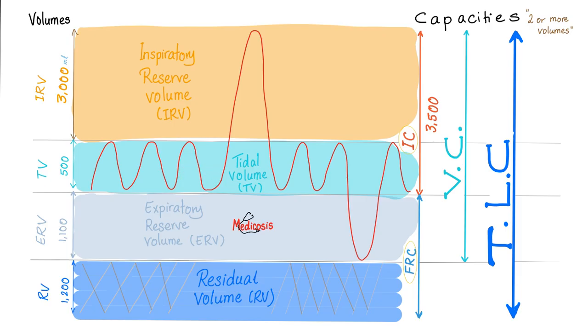Okay Adam, ready for the next challenge? I want you to breathe in maximally to the fullest of your abilities. So Adam will go like this. First, the normal, then the maximum. What did Adam do? 500 in, the same 500 as normal, plus 3,000 mls.